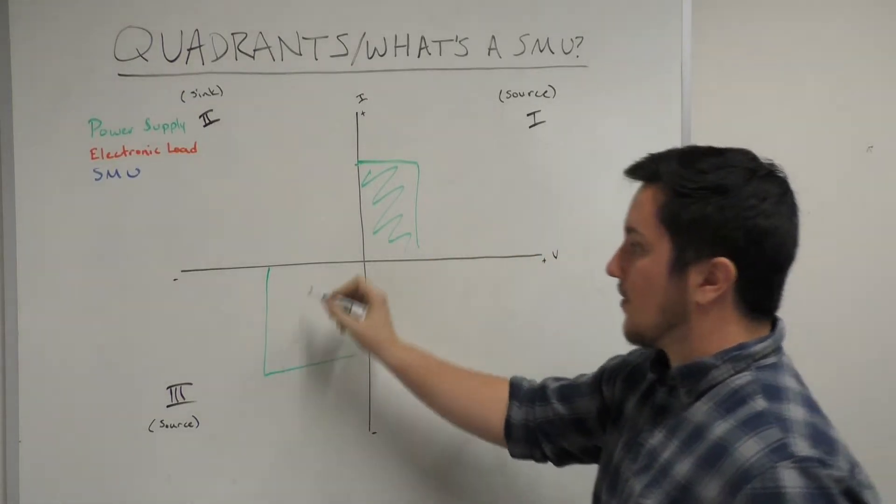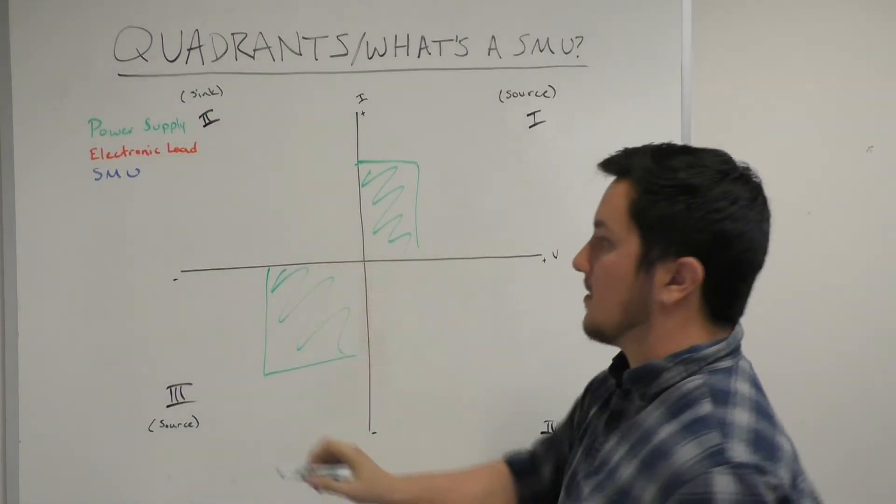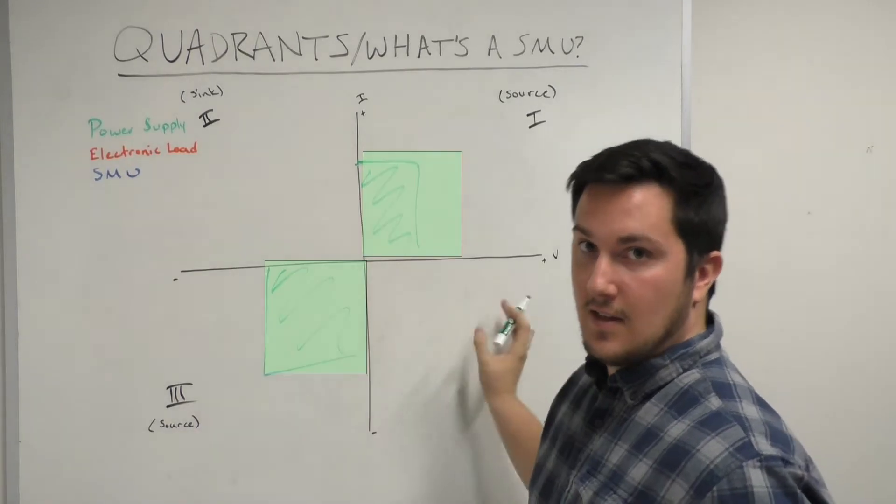A bipolar power supply operates in quadrants 1 and 3 because it's able to source positive and negative voltage.